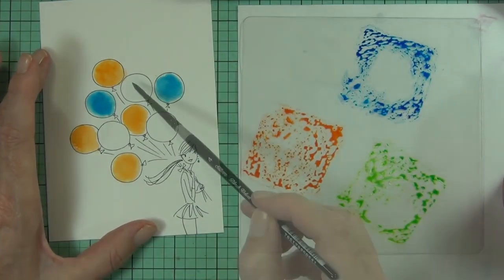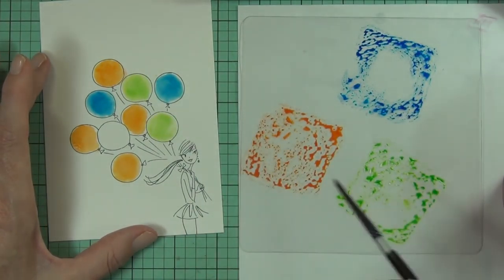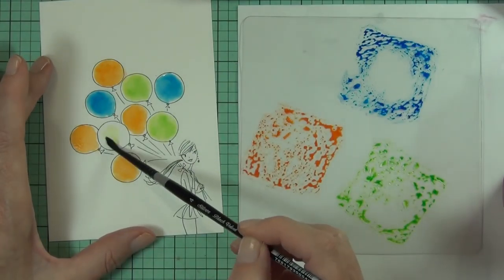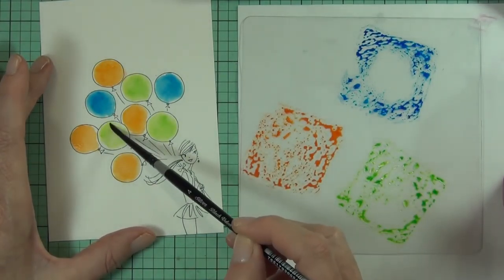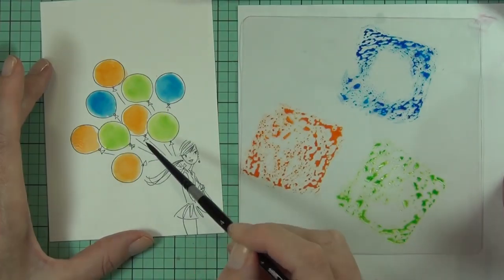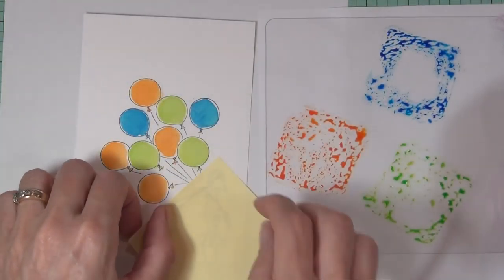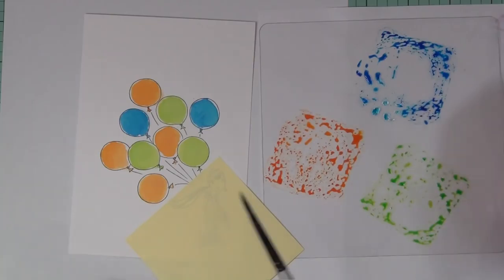I've chosen three bright colored distress inks this time, adding my water, picking up the color and then dropping it into the balloons. This time I'm actually spotlighting some of the image, not all of it though.